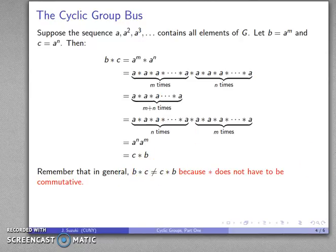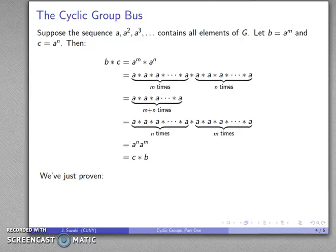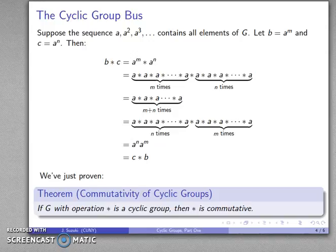Star does not have to be commutative. But if I have a cyclic group, if this sequence contains all elements of G, what this proves is that if G with operation star is a cyclic group, then it's commutative, that B star C is the same as C star B.